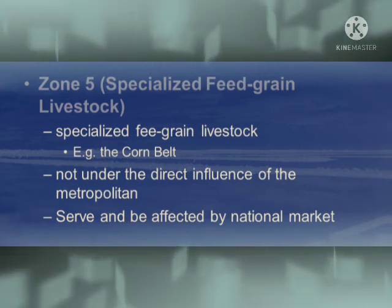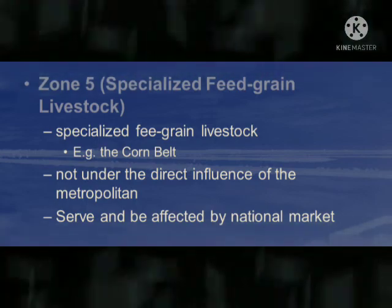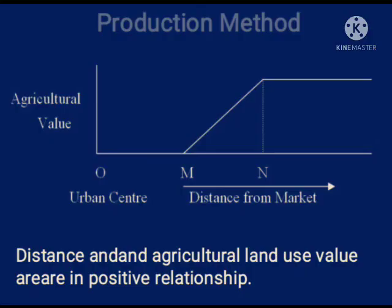Regarding the production method, as shown in the diagram on screen, distance and agricultural land use value are in a positive relationship. The agricultural value increases with increasing distance from the market until it becomes stabilized. This positive relationship is the main theme of the production method.